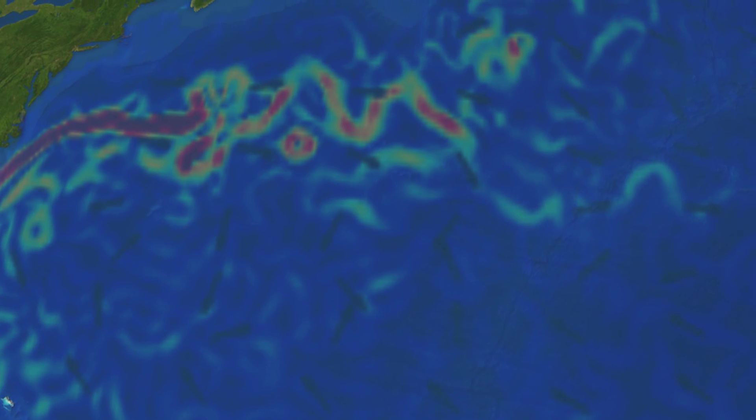If we look at the subpolar gyre, which is located in the North Atlantic, we find that the southern boundary of the gyre is forced by the westerlies, and the northern boundary, that's about 60 degrees north, is forced by the polar easterlies. In this case, Ekman transport results in a low pressure system at the centre of the gyre.